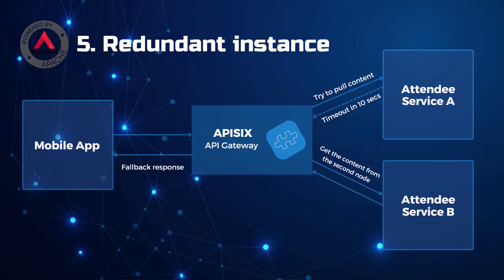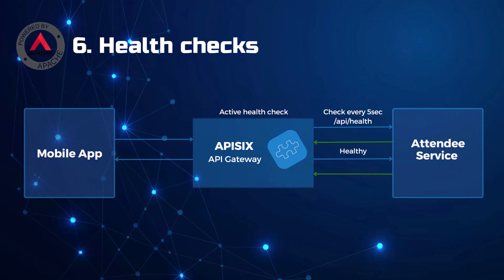Number five is redundancy, a resiliency design pattern in which components are duplicated so that if one fails there will always be a backup. You can create one or more instances of a service and configure routing policies so that if service A is not responding, the request can always be served from service B.